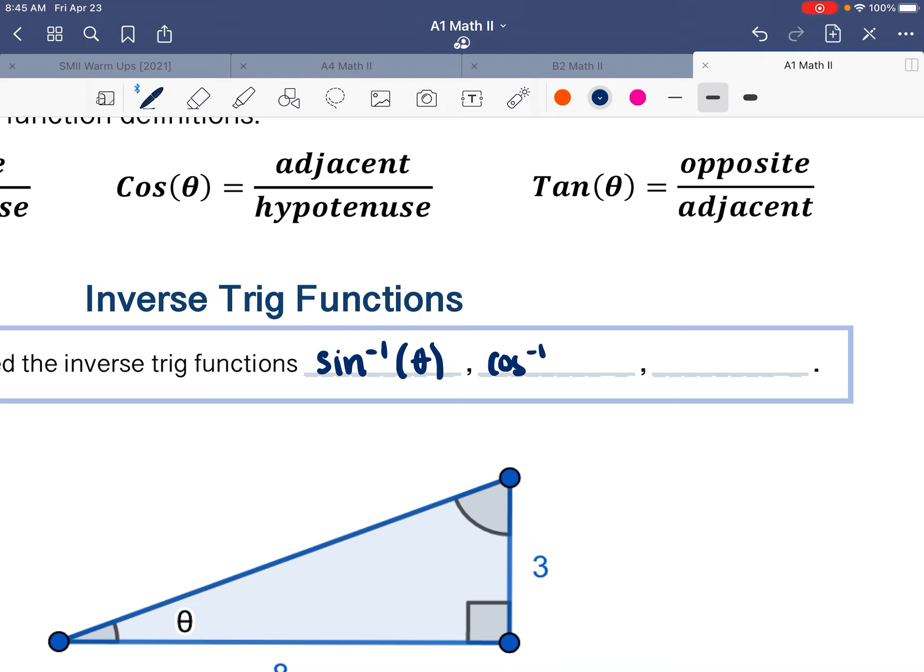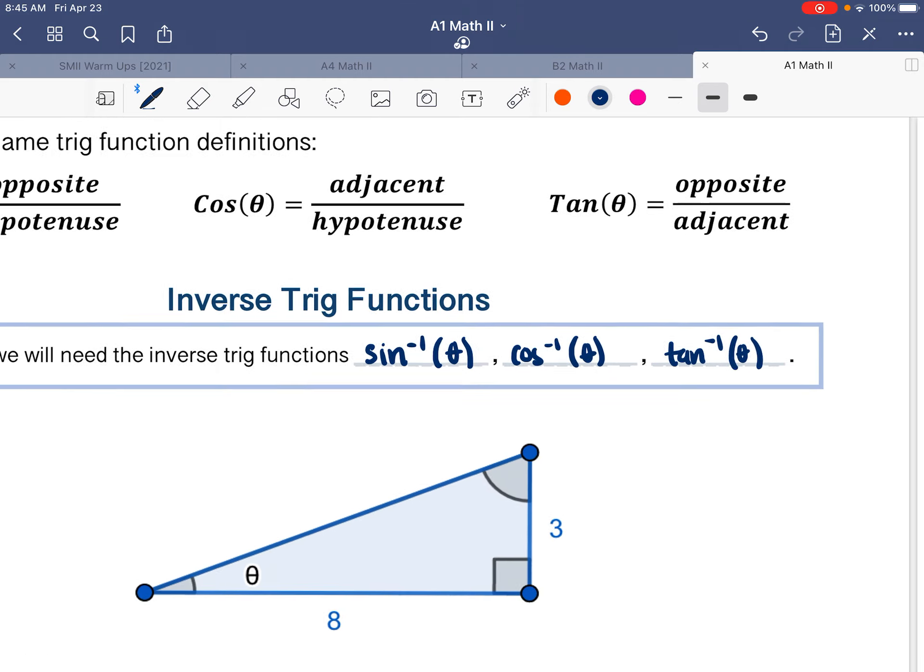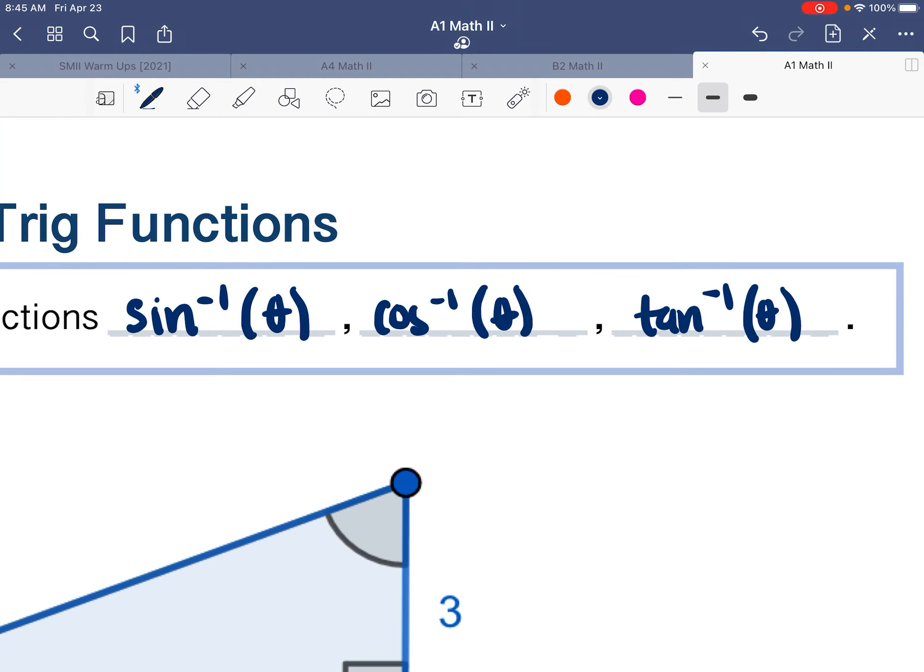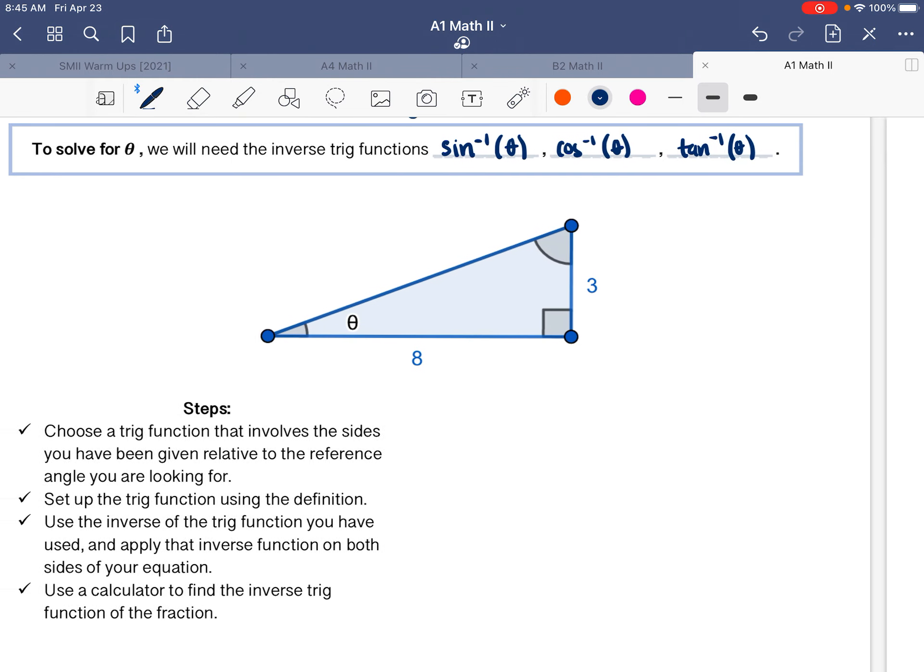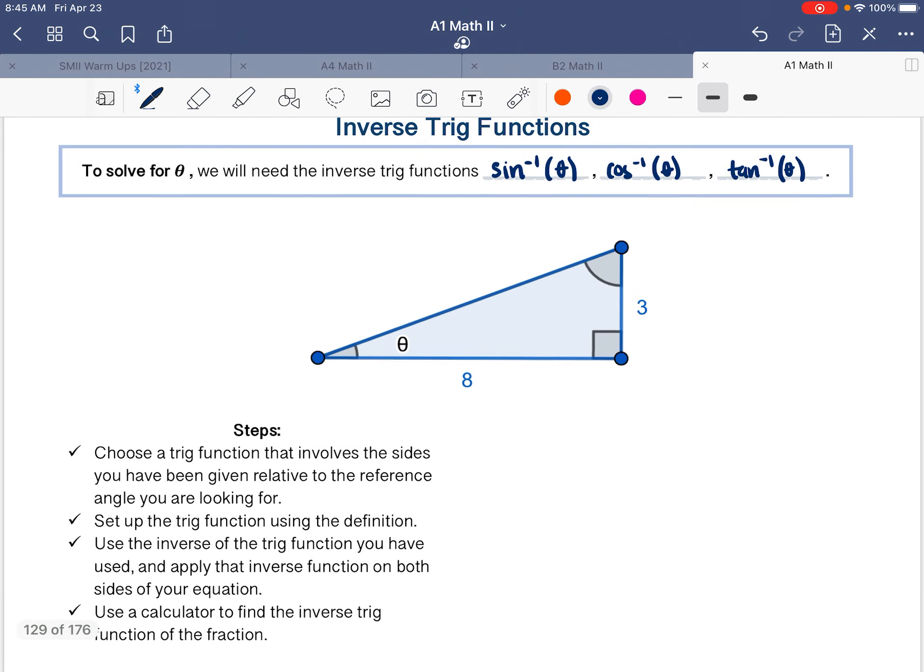You'll find each of these on your calculator. Usually you hit second and then they appear above the sine, cosine, and tangent buttons that you've been using already. So you have access to those on a calculator. All they do is just undo what sine, cosine, and tangent do.